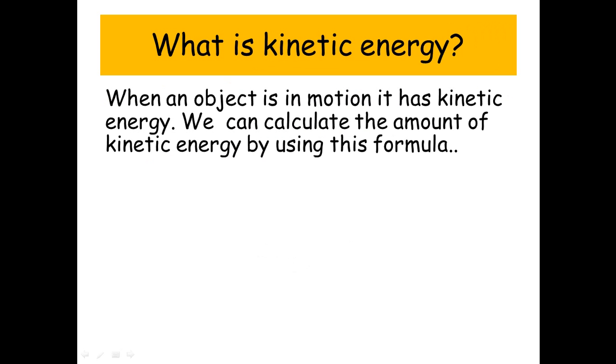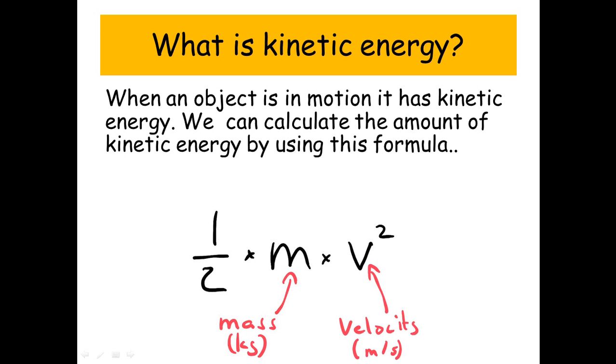We can calculate the amount of kinetic energy by using this formula: half times m times v squared. m is the mass in kilograms, and v is velocity in meters per second. Just note the v squared—it's v times v, not the whole formula that's squared.